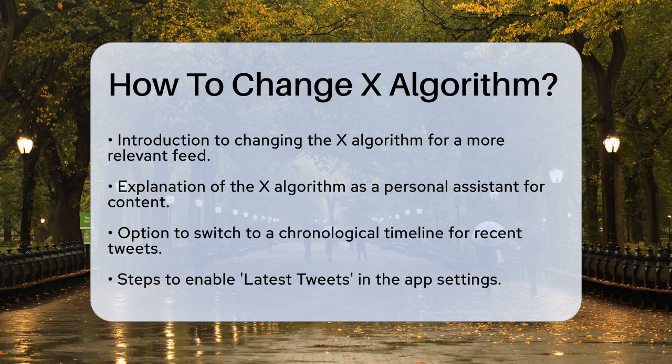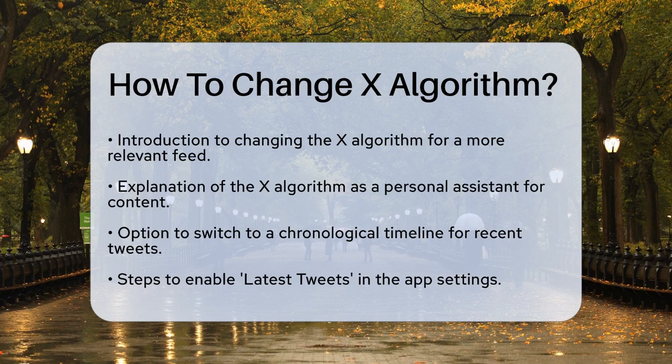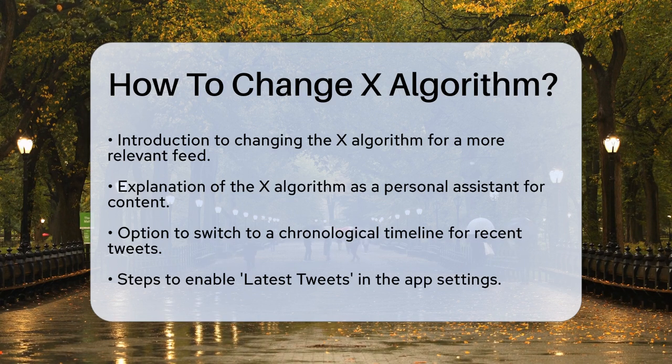One of the simplest ways to change your feed is to switch to a chronological timeline. This means you'll see the most recent tweets first, rather than the ones the algorithm thinks you'll like.